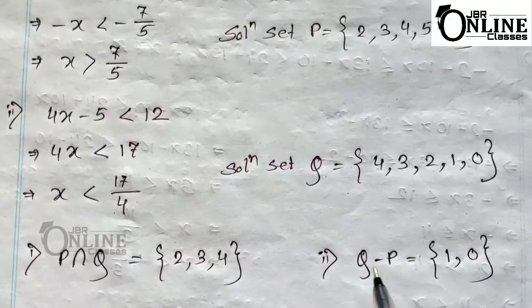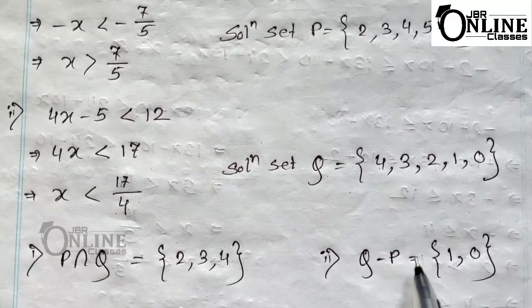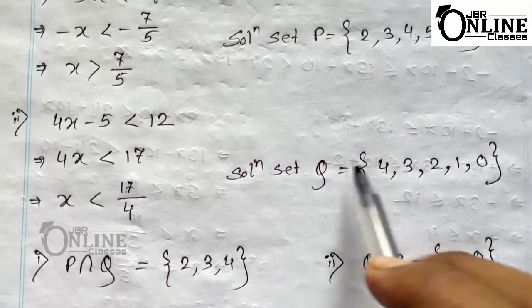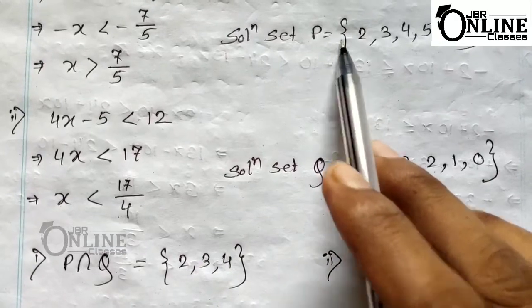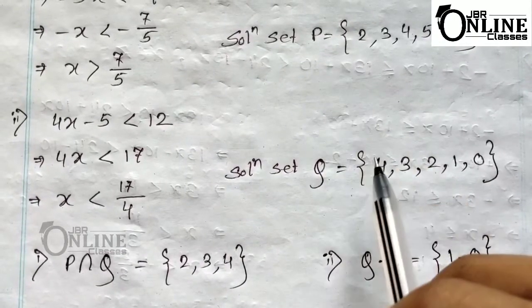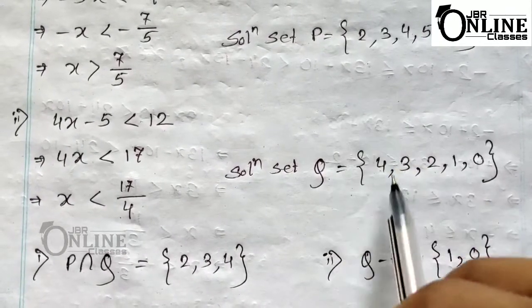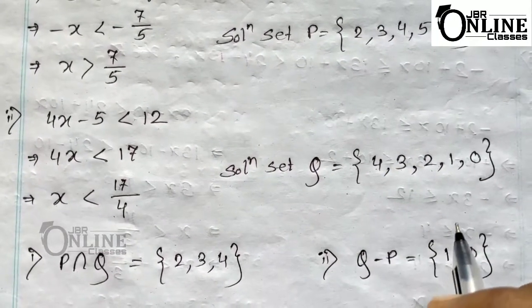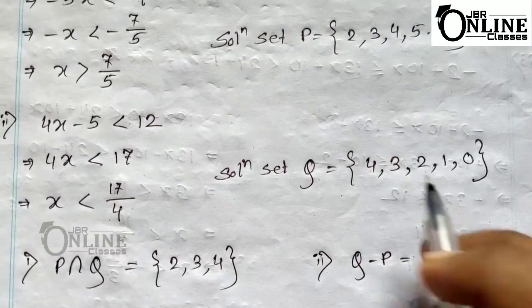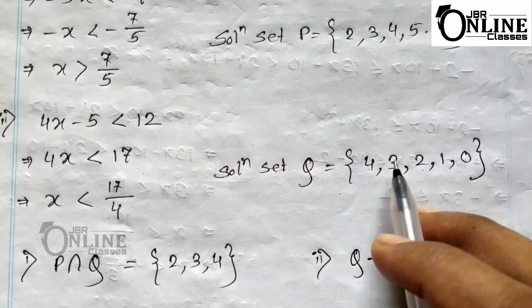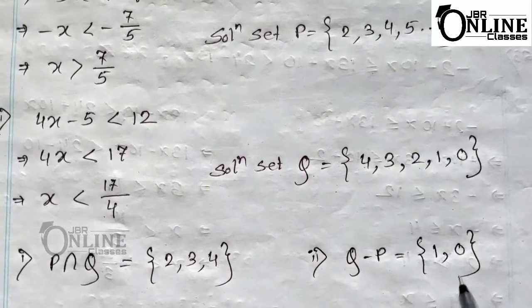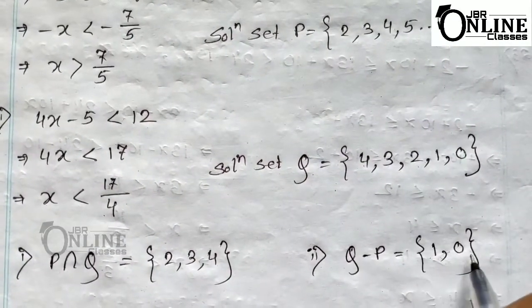For Q minus P, you subtract the elements of P from Q. Since {2, 3, 4} are the common elements, the remaining elements in Q are 0 and 1. So Q − P = {0, 1}.